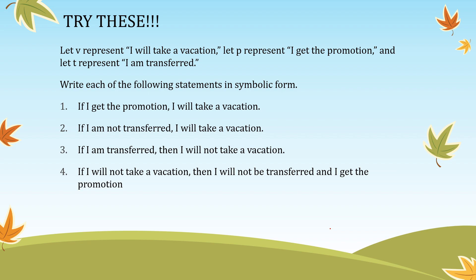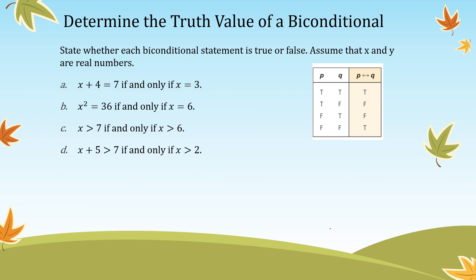Let us have another example: determine the truth value of a biconditional statement — whether each biconditional statement is true or false. Assume that x and y are real numbers. Note that when both statements are true, the biconditional is true; when both are false, the biconditional is also true. P and Q must have the same truth values for the biconditional to be true.